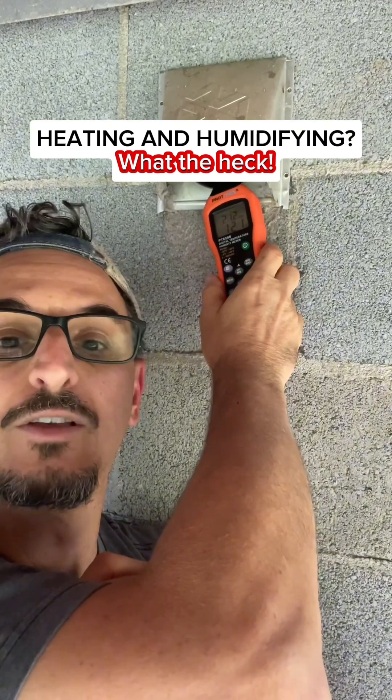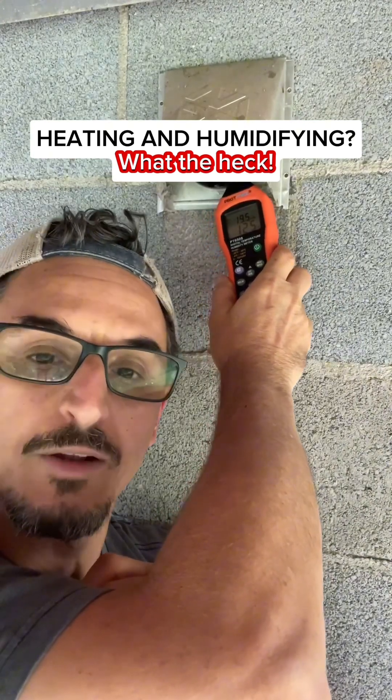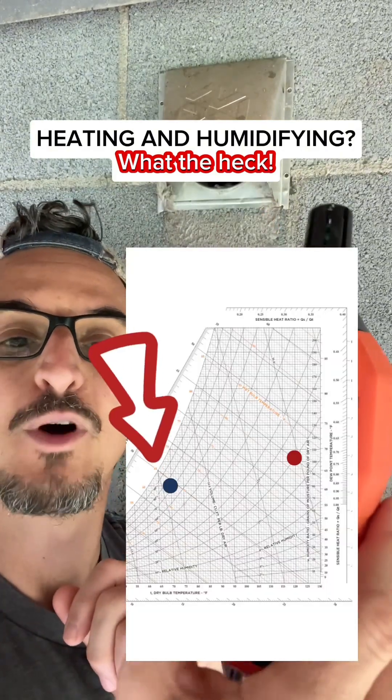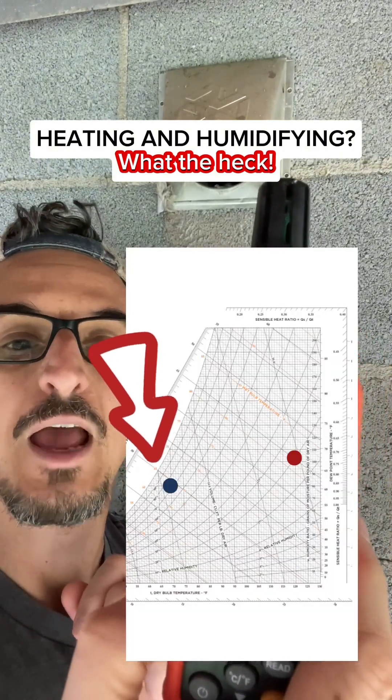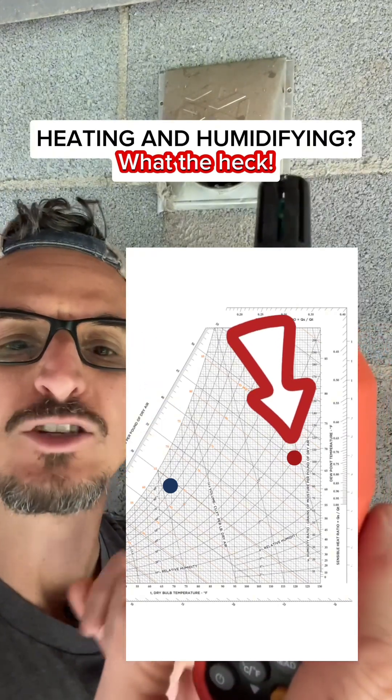Inside it is 70 degrees and a 61 dew point. So if you're to plot 70 degrees and 61 dew point on your psychrometric chart and then also plot 122 degrees and 20-ish percent RH,